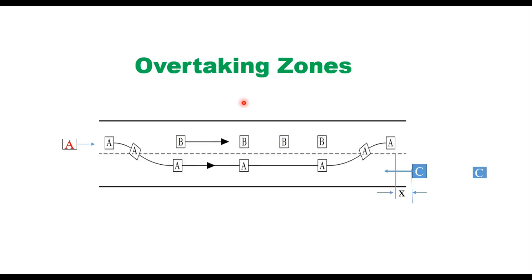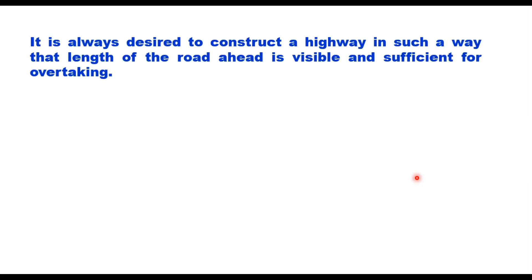An overtaking operation requires that a fast-moving vehicle A should be able to overtake a slow vehicle B and merge within its own lane before colliding with oncoming traffic from the opposite direction. Therefore, it is always desired to construct a highway in such a way that the length of road ahead is visible.